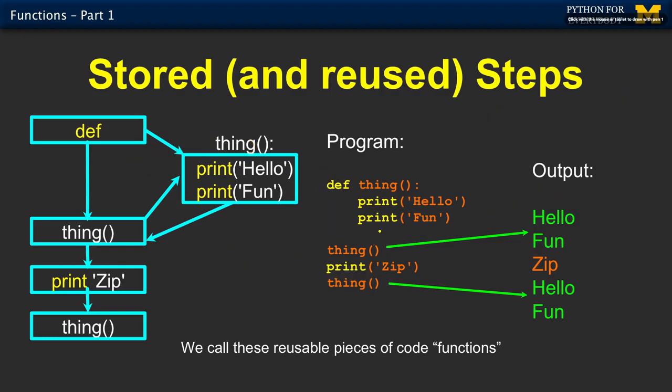So what happens is def does nothing but remembers thing, then says, oh, let's go back and run that thing, run those two lines. So out come hello and fun. And then it comes back down to here, runs this print statement, so out comes zip. And then it says, oh, run that code again. So this is the don't repeat yourself part. Run this, print, print, do it again. And now the program's done.